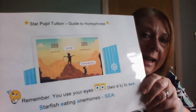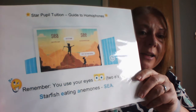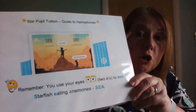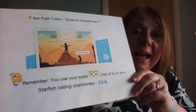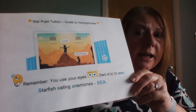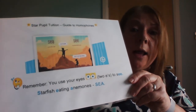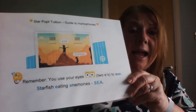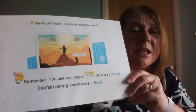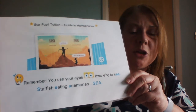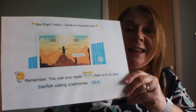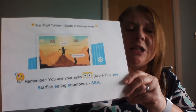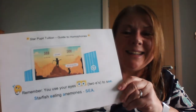The first pair we're going to look at are SEA and SEE. The little trick: you've got two eyes, so you use your eyes to SEE — two E's. And here's a mnemonic for the sea you swim in: 'Starfish Eating Anemones' — S-E-A. So remember your two eyes for seeing, and in the sea we might see starfish eating anemones.